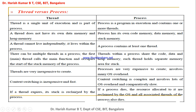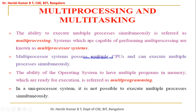Thread execution is faster. If a thread expires, its stack is reclaimed by the process. If a process dies, the resources allocated to it are reclaimed by the OS. If a thread dies, the resources it used are assigned back to the process. If the process dies, all resources allocated to the process are given back to the operating system.